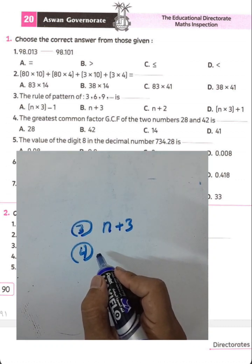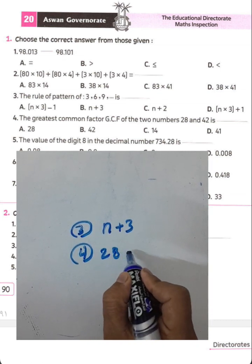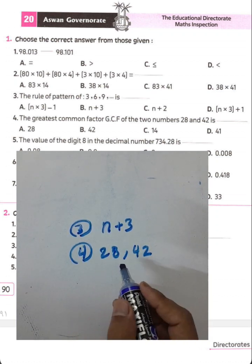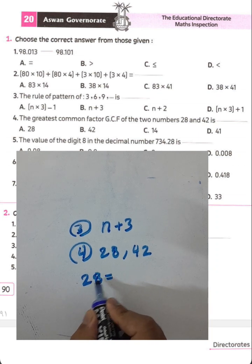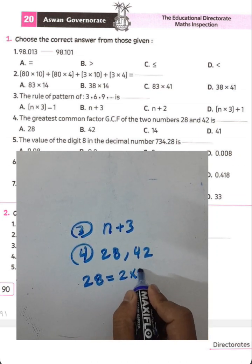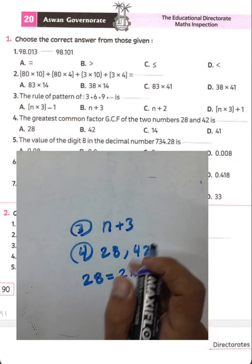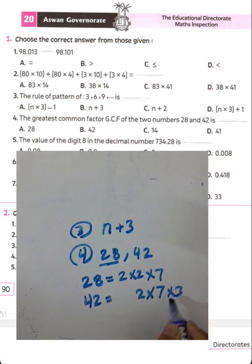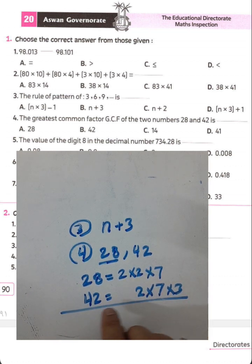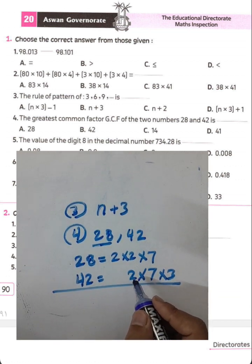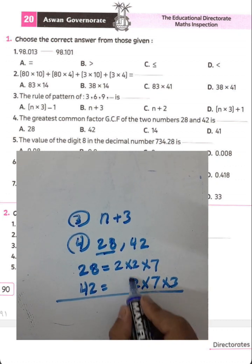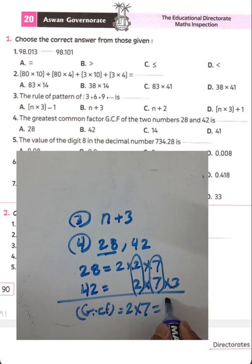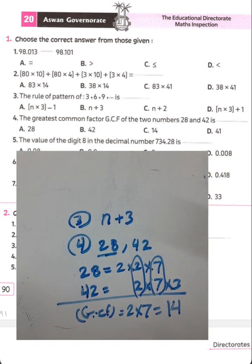The greatest common factor of 28 and 42. Factorizing: 28 equals 4 times 7, and 4 equals 2 times 2, so 28 equals 2 times 2 times 7. For 42, we factorize similarly. The greatest common factor will be 2 times 7, which equals 14. That is the greatest common factor between the two numbers.